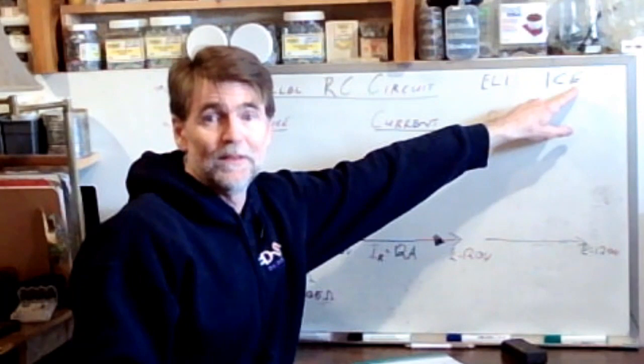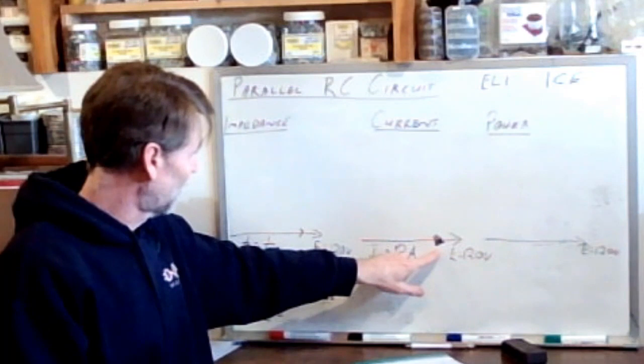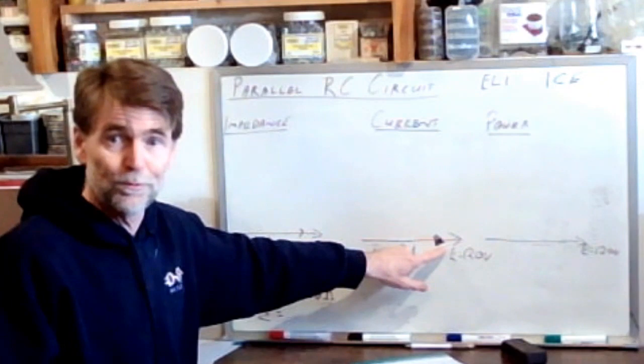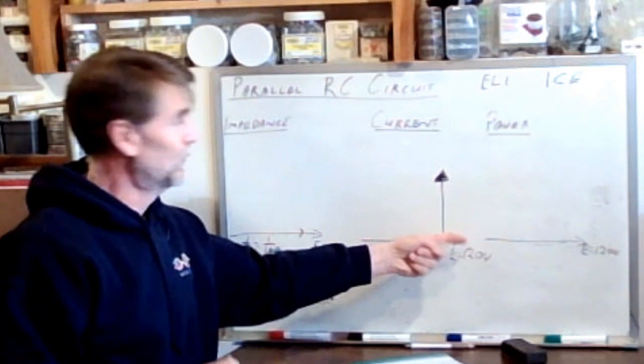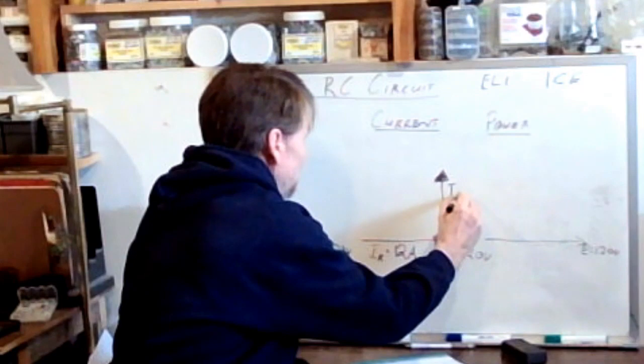So that in a capacitive circuit, the current is leading the voltage. So if this is our voltage here at zero degrees, and the current vector through the resistor also at zero degrees, no phase shift because of the resistor or through the resistor, but now through the capacitor, current leads the voltage, so there's the current vector at 90 degrees leading the voltage vector, which is at zero degrees. So this is IC.